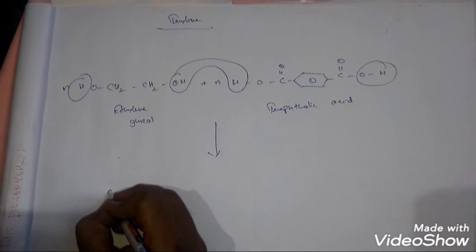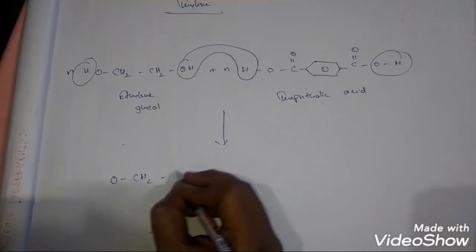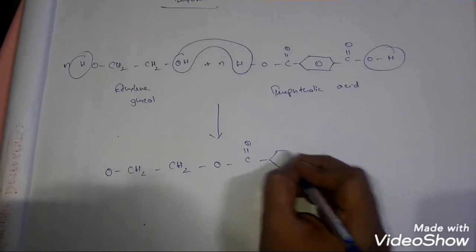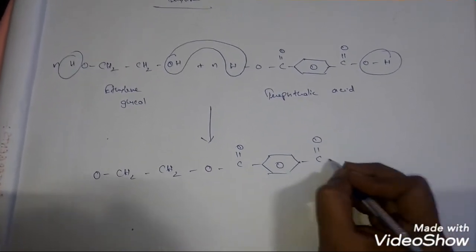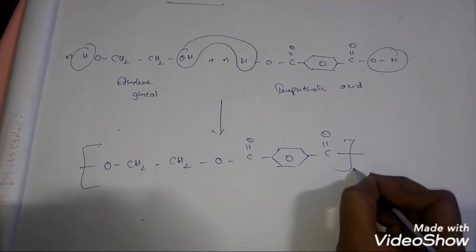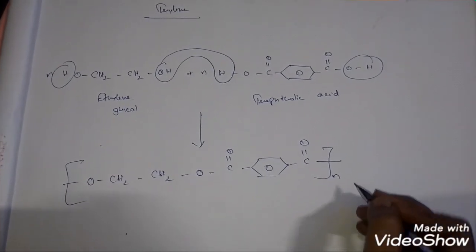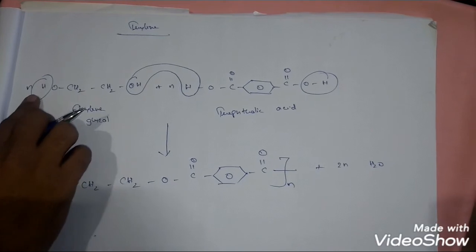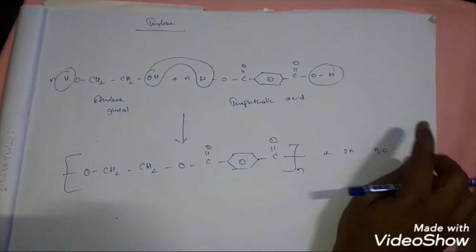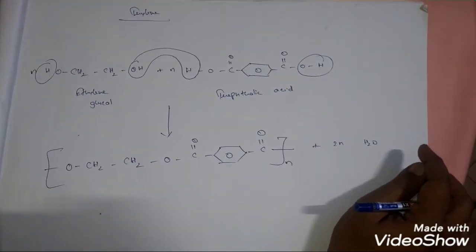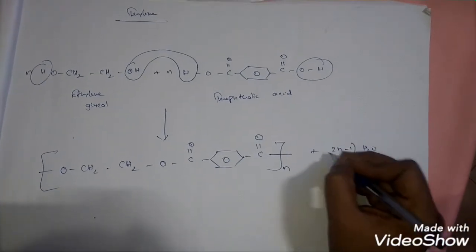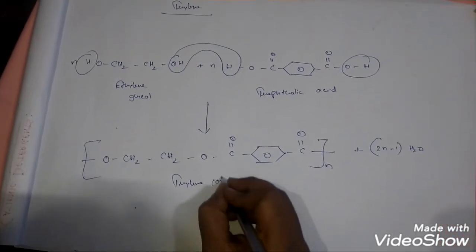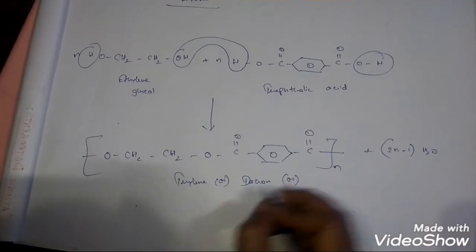What is remaining after the combination is: O–CH₂–CH₂–O–C(=O)–benzene–C(=O), repeated N number of times. How many water molecules are released? 2N water molecules are supposed to be released, but at the initiation part there will be one hydrogen remaining, and at the termination part there will be one OH remaining. So it is 2N minus 1 water molecules released. This product is otherwise called as Terylene or Dacron.